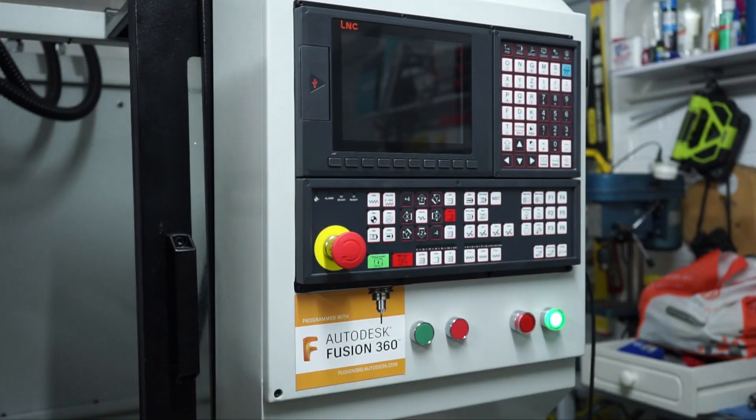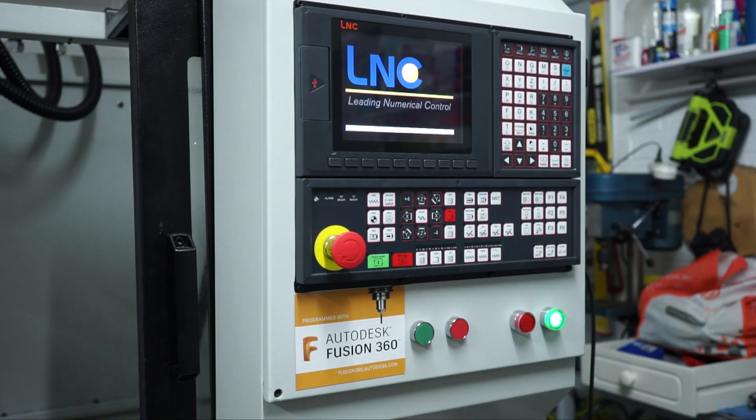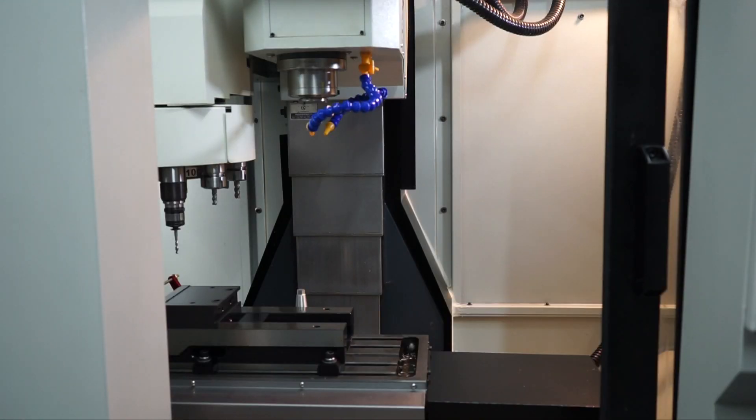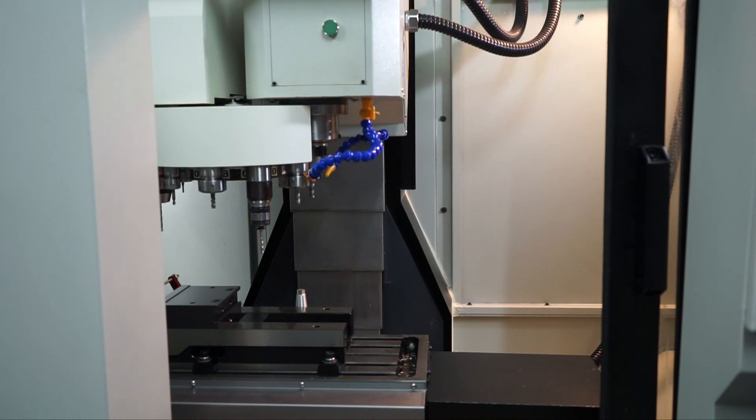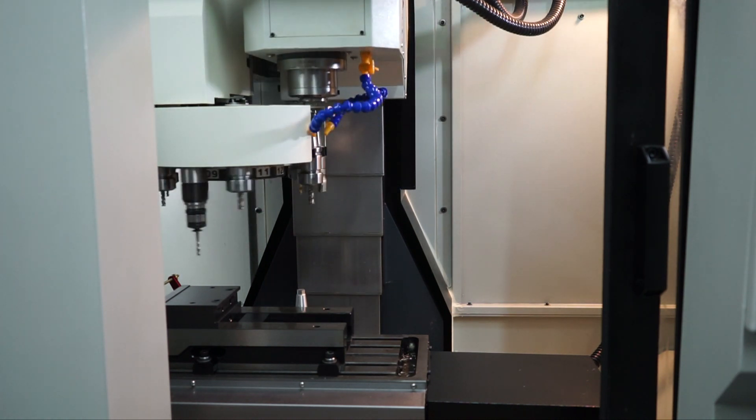Now let's turn on the controller and wait for it to boot. That's out of the way, let's try a tool change to ensure the tool change is going in the correct orientation, and if that works, run a spindle warm-up cycle.